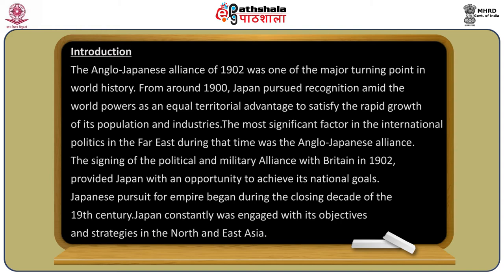The most significant factor in international politics in the Far East during that time was the Anglo-Japanese alliance itself. The signing of the political and military alliance with Britain in 1902 provided Japan with a good opportunity to achieve its national goals. Japan's pursuit of empire began during the closing decade of the 19th century, as Japan was constantly engaged with its objectives and strategies in North and East Asia.